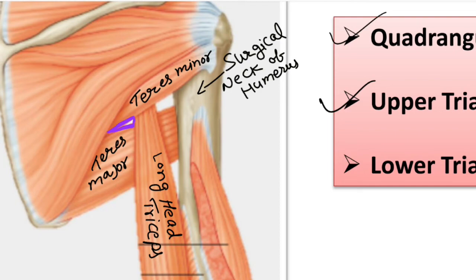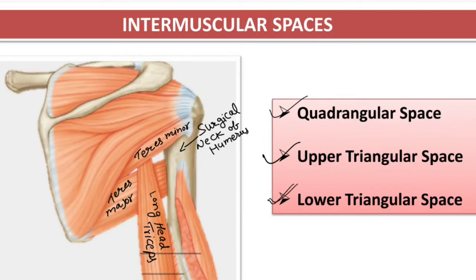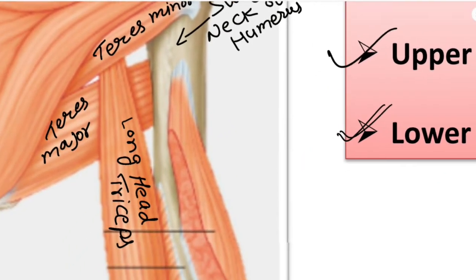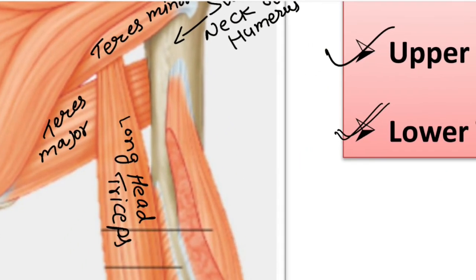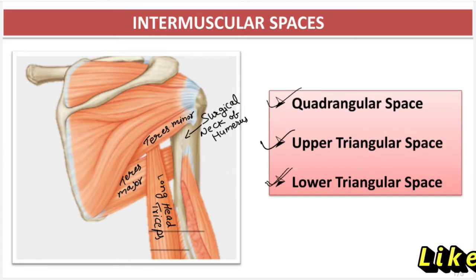The third space is the lower triangular space. What are its boundaries? Medially it is bounded by the lateral border of the long head of the triceps. Laterally by the medial border of the humerus. And superiorly by the lower border of the teres major muscle. So this is the lower triangular space.